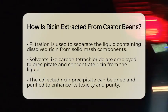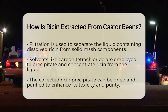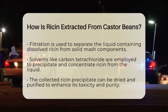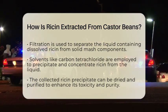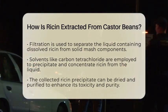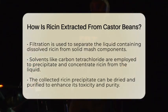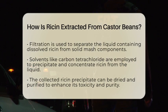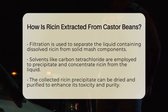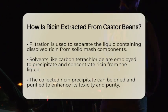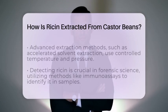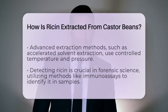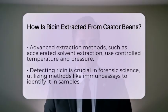To concentrate the ricin, it needs to be precipitated from the liquid. This often involves using solvents like carbon tetrachloride. These solvents help to separate the ricin protein from the rest of the solution. The ricin is then collected as a precipitate, which can be dried and purified to increase both its toxicity and purity.